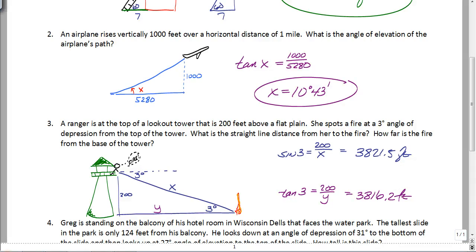Remember, angle of elevation and angle of depression are always based on the horizontal. So she was originally looking horizontally, and then she looked down to see the fire. So that angle is actually outside of the triangle that I have drawn here. Now, of course, you could have drawn your triangle upside down to begin with. It really doesn't matter which way you draw your triangle. But if you like keeping your triangle on the ground, just remember alternate interior angles will bring this angle to three degrees anyway.